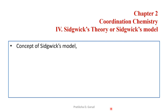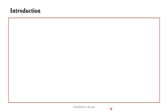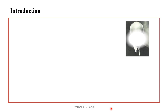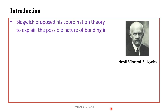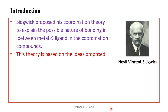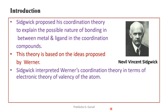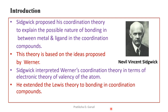In this Sidgwick theory or the Sidgwick model, these are the points that we are going to study. First, we have the introduction. As the name suggests, this theory is given by the scientist Sidgwick — Neville Vincent Sidgwick — who proposed this theory to explain the possible nature of bonding between the metal and the ligands in the coordination compounds. This theory is based on the ideas proposed by the scientist Werner. Sidgwick interpreted Werner's coordination theory in terms of the electronic theory of valency of the atom.